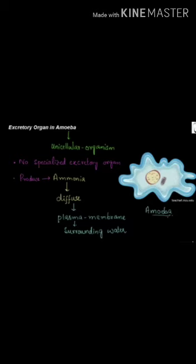In animals, waste mainly includes carbon dioxide, waste from the digestive system, and other substances such as urea and uric acid. Animals such as amoeba, paramecium, and hydra do not have a well-developed excretory system — they get rid of body waste by direct diffusion through the cell membrane. Animals such as earthworms, insects, and leeches have tubular structures that help to get rid of body waste.